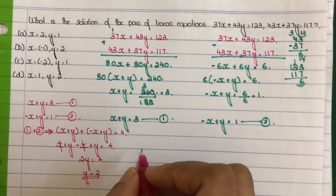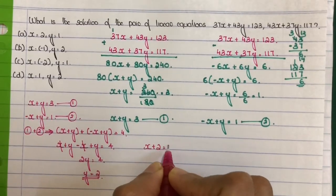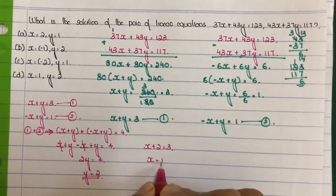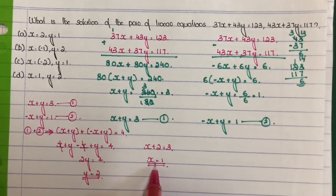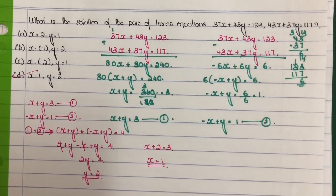Next step, find the value of x. Substitute y is equal to 2 in equation number 1: x plus 2 is equal to 3, so x equal to 3 minus 2, that is 1. So x equal to 1 and y is equal to 2. The answer is option D.